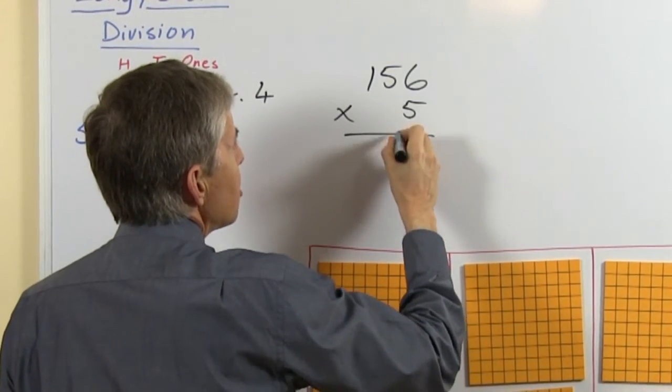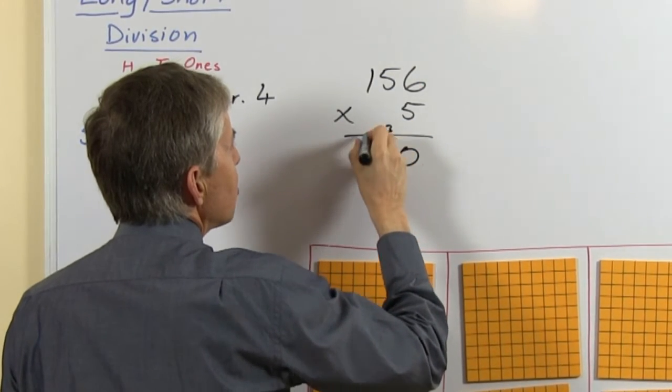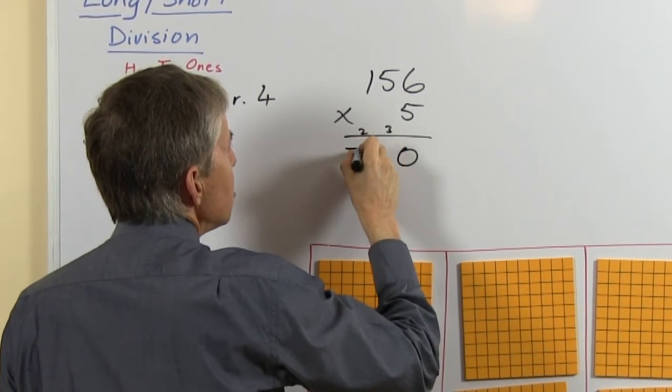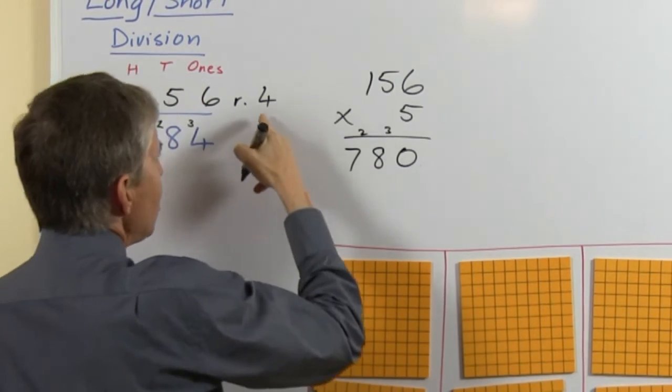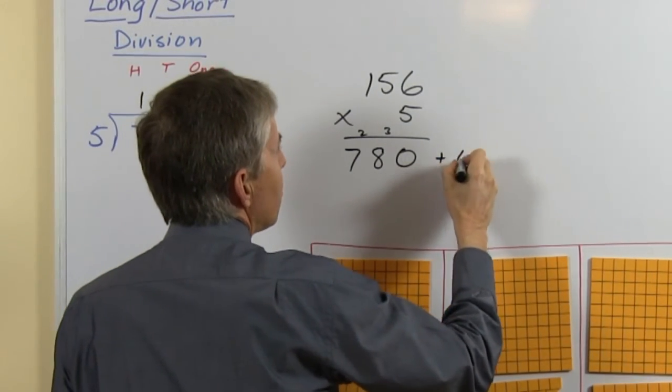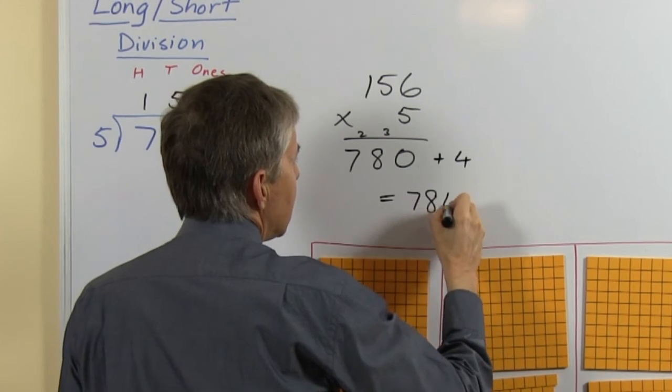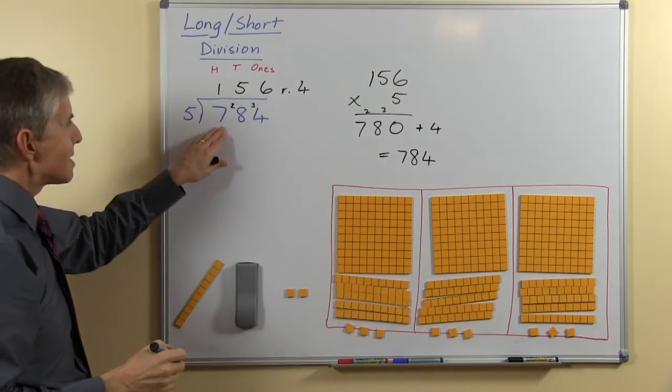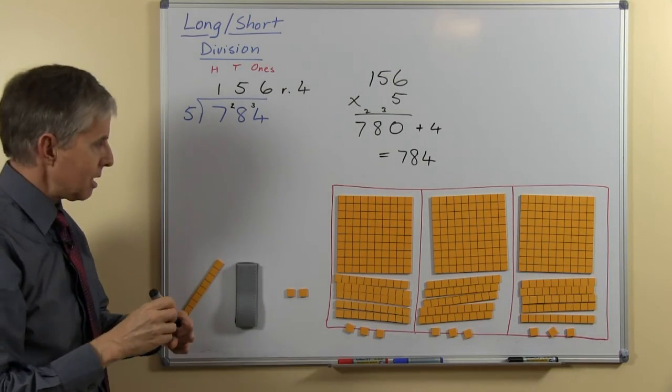So we do 5 sixes are 30, 5 fives are 25 and 3 is 28, 5 ones are 5 and 2 is 7. The last thing we have is a remainder of 4, so we'll add 4 and we get the answer 784, which is the same as the number that we started with.